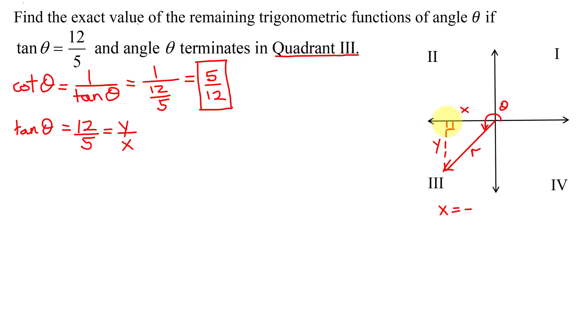And since y goes below the x-axis, you also know y has to be a negative number too. So I'm going to let y equal negative 12, x equal negative 5, and when you divide negative 12 by negative 5, you get the tangent function of 12 fifths.